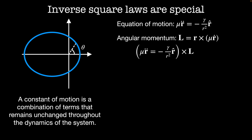Now we're going to do something that's a little strange. We're going to take the cross product of the force equation with the angular momentum. It's not obvious at this stage why this makes any sense, but I promise that the algebra will lead us somewhere interesting. We're going to expand the r-hat term using its definition, the vector r divided by its magnitude. Then the left-hand side gives us r-double-dot cross the angular momentum L, and the right-hand side is minus gamma divided by r cubed times r cross r cross r-dot. I've divided both sides through by a factor of mu — one factor from the left side of the equation, and the other from the linear momentum component of the angular momentum.